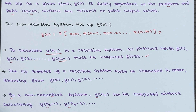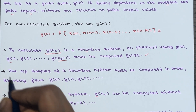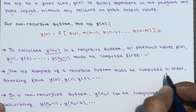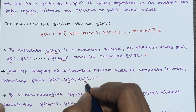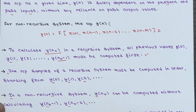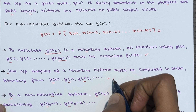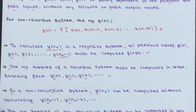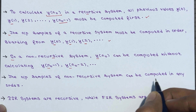One more important point: the output samples of a recursive system must be computed in order — starting from y of 0, then y of 1, then y of 2, and so on — because the recursive system depends upon past output values. That is not the case in non-recursive systems.